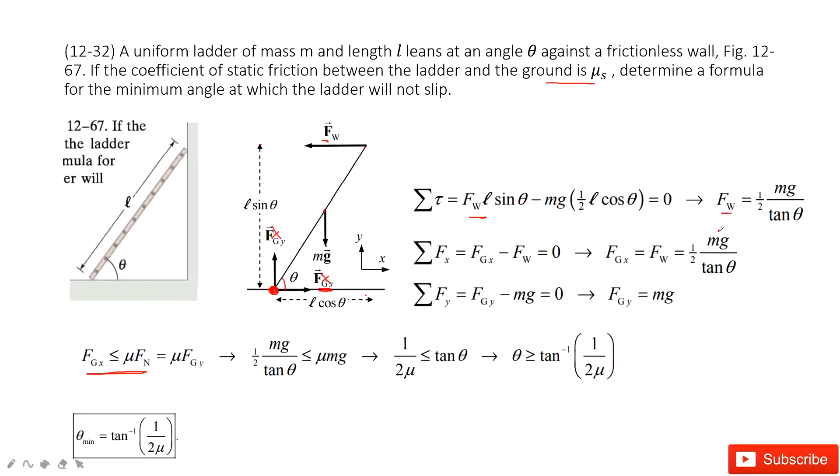So from this equation, we get F_w equal to mg over 2 tan theta. Now you can see we have F_gx, F_gy. The most important thing is F_gx. We say if we want to make sure it's static balance, it is not larger than the static friction force. Static friction force is mu times F_gy. Now we input this F_gx and F_gy inside, we get this function and solve it. We can get the function for theta and the minimum theta is there. Thank you.